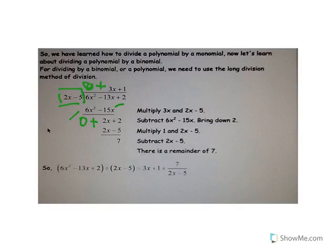Now I've got negative 13x minus a negative 15x. Minus a negative becomes a positive, so I end up with 2x. This is the part where you really need to keep track of your negative signs. So it's 2x, then I bring down that 2. Now I need to get rid of the 2x term by multiplying by 1 — so plus 1. 1 times 2x minus 5 is just 2x minus 5, and I subtract out the x's.